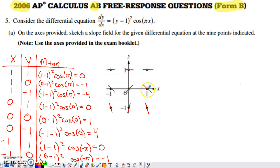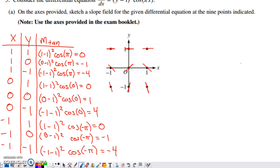I then dropped down to this ordered pair, 1 comma 0. When I put 0 in for y and 1 in for x and evaluated, I ended up getting negative 1. So I just had to draw a line segment with a slope of negative 1 at that location. You just repeat that process over and over again for all nine of the ordered pairs that you're asked to draw the line segments at.